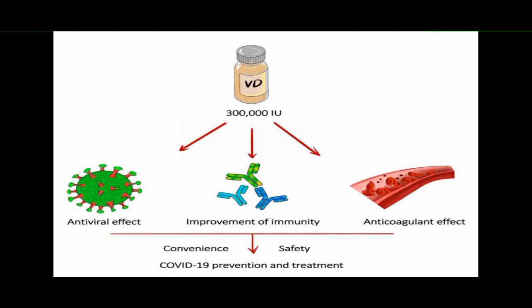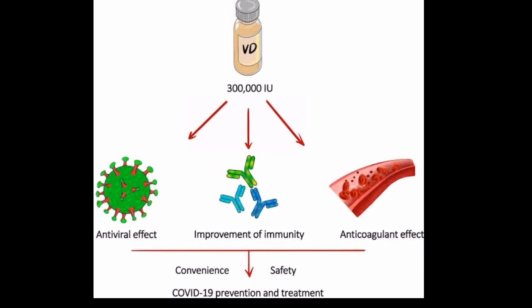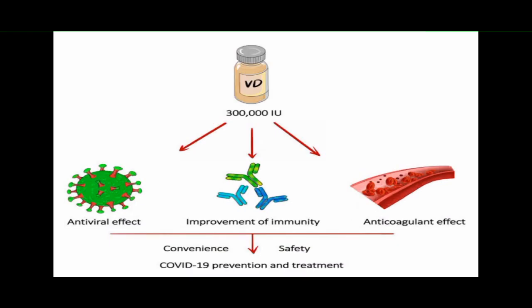Researchers from Clinical Endocrinology and Metabolism looked at 216 COVID-19 patients in a hospital in Spain and found that 82% were deficient in vitamin D. People with COVID-19 and lower vitamin D levels also had higher inflammatory markers such as ferritin and d-dimer. Ferritin is a blood protein that contains iron, and a ferritin test helps your doctor understand how much iron your body stores. D-dimer is a protein fragment made when a blood clot dissolves in your body. Blood clotting is an important process that prevents you from losing too much blood when injured.